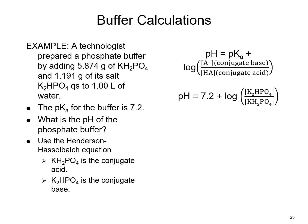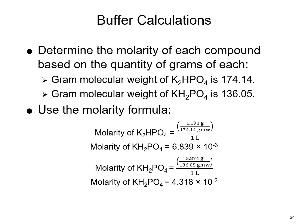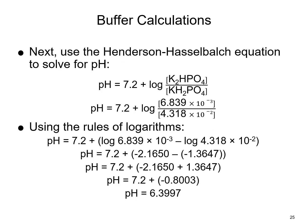To find the pH of the phosphate buffer, we use the Henderson-Hasselbalch equation, identify the conjugate acid and conjugate base, then determine the molarity of each compound from the grams given using their molecular weights and the molarity formula. Plugging those values in and applying the rules of logarithms ultimately gives the pH of the solution.